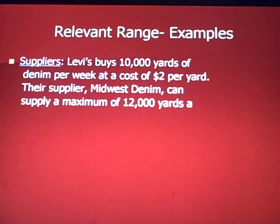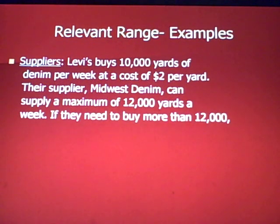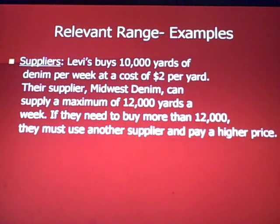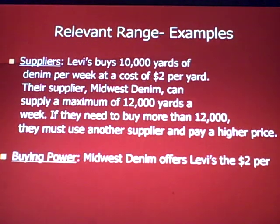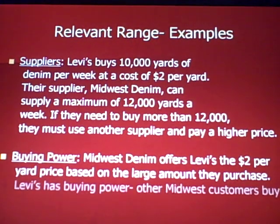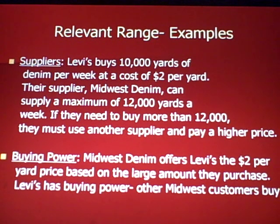For suppliers: Levi's buys 10,000 yards of denim a week at $2 a yard from Midwest Denim, which can supply a maximum of 12,000 yards a week. If Levi's goes over 12,000 yards, they have to find another supplier and pay a higher price. The reason Midwest Denim offers Levi's the $2-a-yard price is based on their large purchase volume — Levi's has buying power. Other companies buy less and pay a higher price.